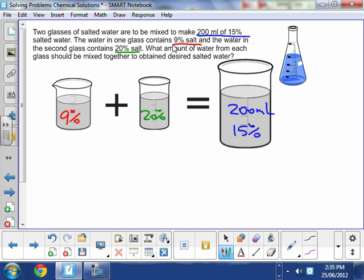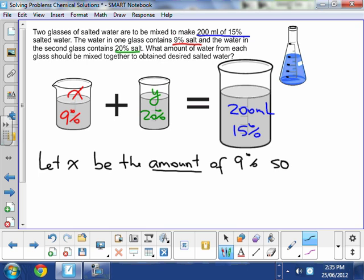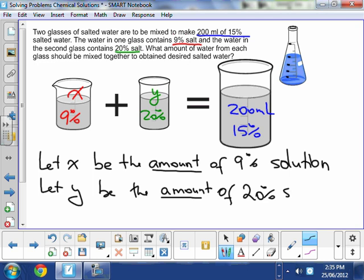Okay, I know my approach when I don't know. How about I name this X and I name my second solution Y and I introduce my variables. Let X be the amount, very important, the amount of 9% solution, and let Y be the amount of 20% solution, represented with red and green over there.